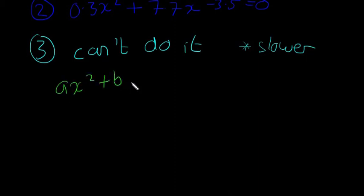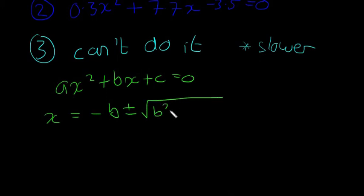Remember, it's always going to be in the form ax squared plus bx plus c equals zero, and the formula itself is x equals minus b plus or minus the square root of b squared minus 4ac, all divided by 2a. Make sure that this bit gets divided by 2a as well, not just this bit here.